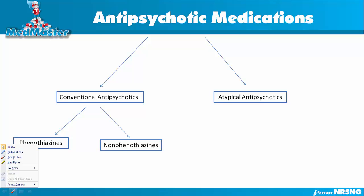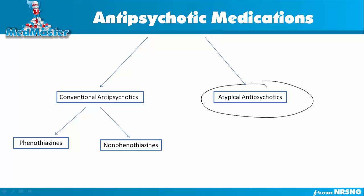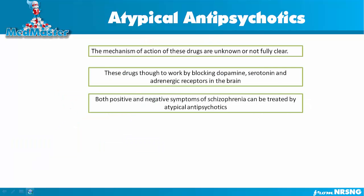In this video we're going to talk about antipsychotic medication, specifically the atypical antipsychotic. There are two classes: conventional and atypical. Conventional antipsychotics are older drugs, while atypical antipsychotics are newer drugs used to treat psychosis — mostly schizophrenia. There are also two subtypes within conventional antipsychotics: phenothiazine and non-phenothiazine.